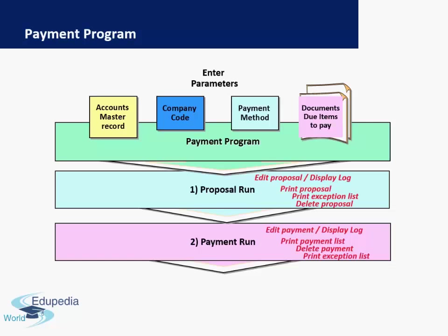There are a couple of things which need to be entered as parameters at the start. We first have the payment ID and the payment date, which is always unique to every payment run. Secondly, we need to enter parameters like the vendor number, the company code, the payment method, and we can choose specific documents to pay. If we do not choose any specific documents manually, then all documents due for this vendor will be paid. We should also enter the due-by date, which will indicate to SAP which documents need to be picked up — those due on or before the specified date.